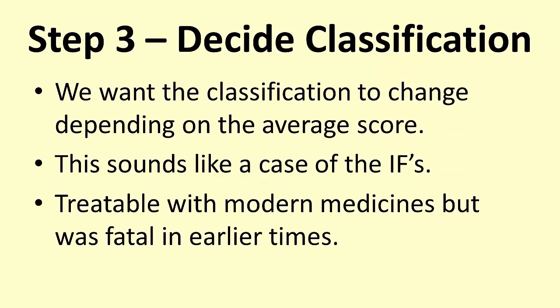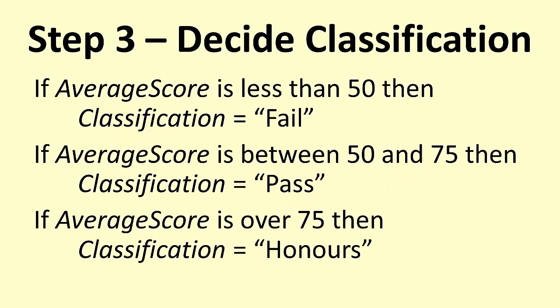So let's decide on a classification. We want the classification to change depending on the average score. This sounds like a case of the ifs. If your grade is this, then, and if your grade is that, then, and that's treatable with modern medicines, but it was fatal in earlier times. So let's have a look. If average score is less than 50, then the classification is fail. This is that pseudo code again. This is where we're putting our thoughts down into pretend computer program. If the average score is between 50 and 75, then the classification is pass. And if the average score is over 75, then the classification is honors. There's nothing particularly clever going on here. We're just writing out the logic that we were given in the scenario.